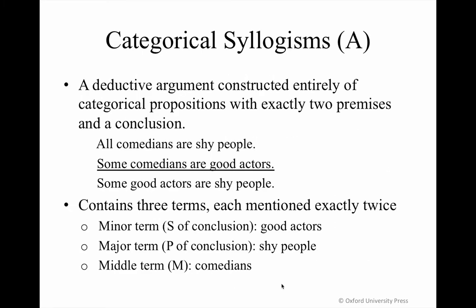You already know what an argument is, and you already know when an argument is valid or invalid. You also already know that in the system of categorical logic we're dealing with four proposition types only, and we understand how to organize a sentence so that it reflects standard form for the categorical proposition. We're now moving on to study the categorical syllogism.